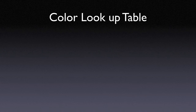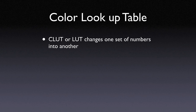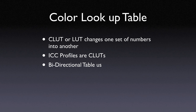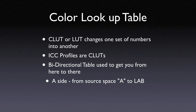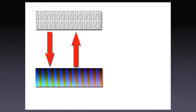A color lookup table — CLUT, or sometimes simply LUT — is used to change one set of numbers into another. This is what an ICC or ICM profile is: a color lookup table. These CLUTs are bi-directional, essentially going to and from Lab. The A side goes from the source color space to Lab, and the B side goes from Lab to the destination color space. So a profile has a lookup table that moves in two directions: to Lab and from Lab.